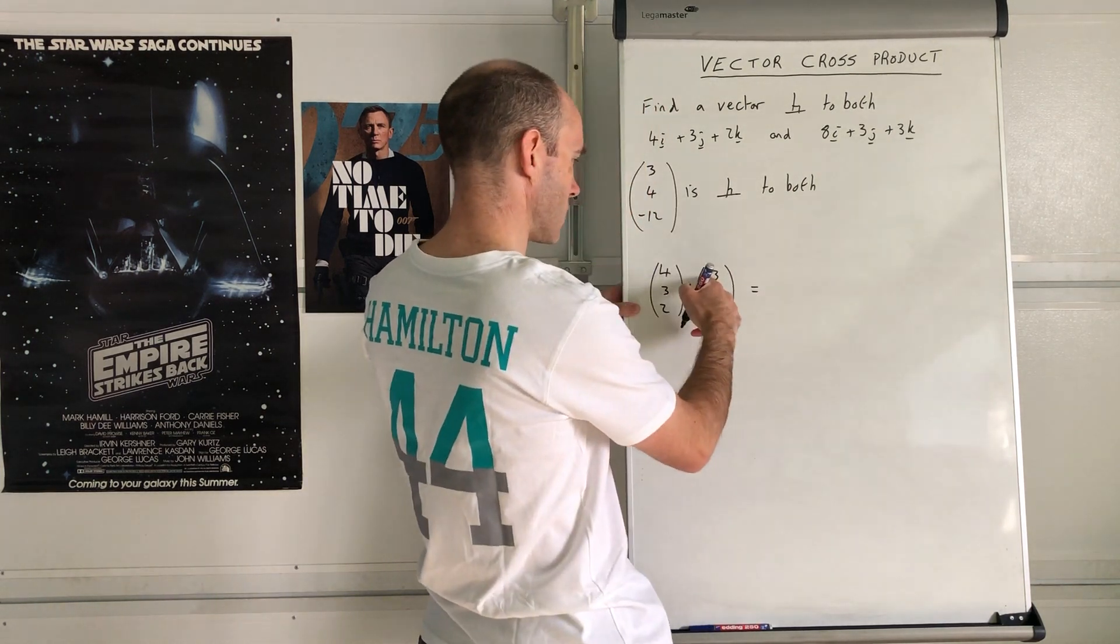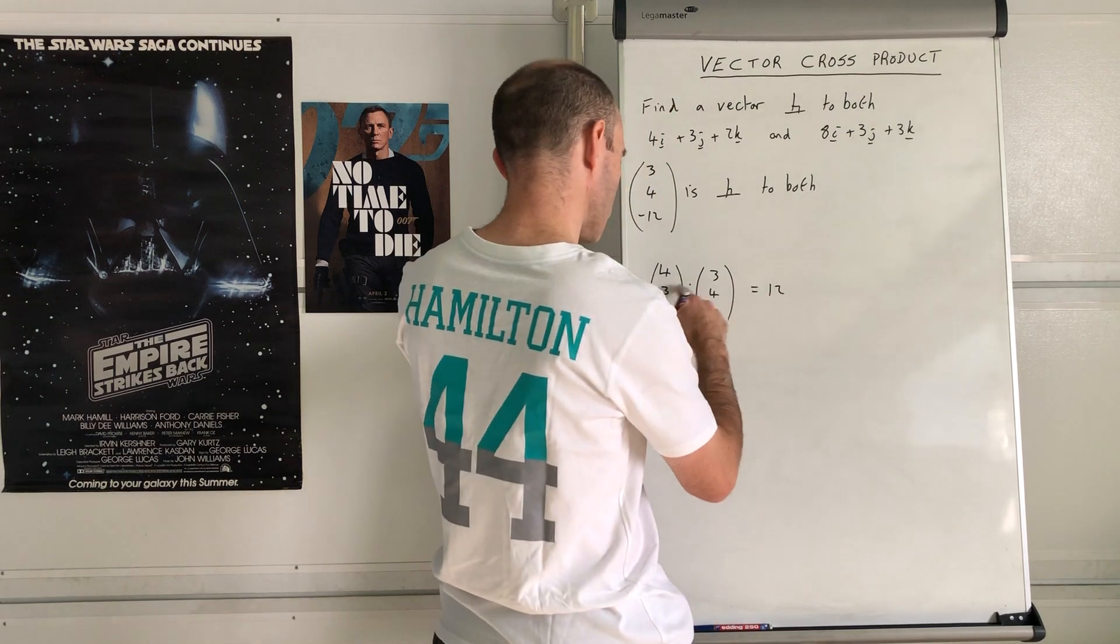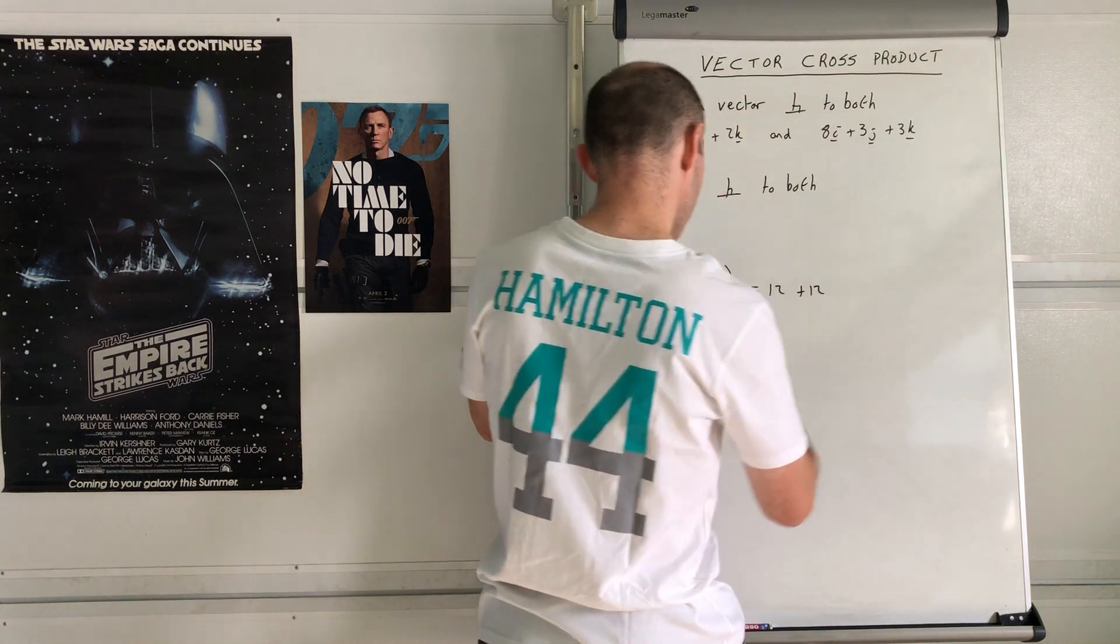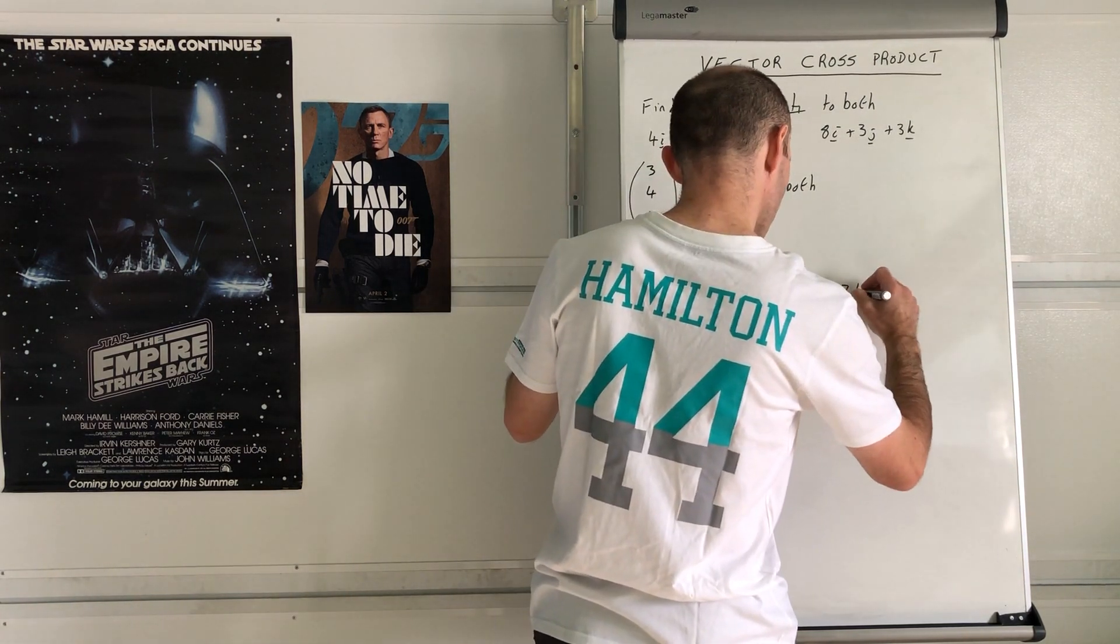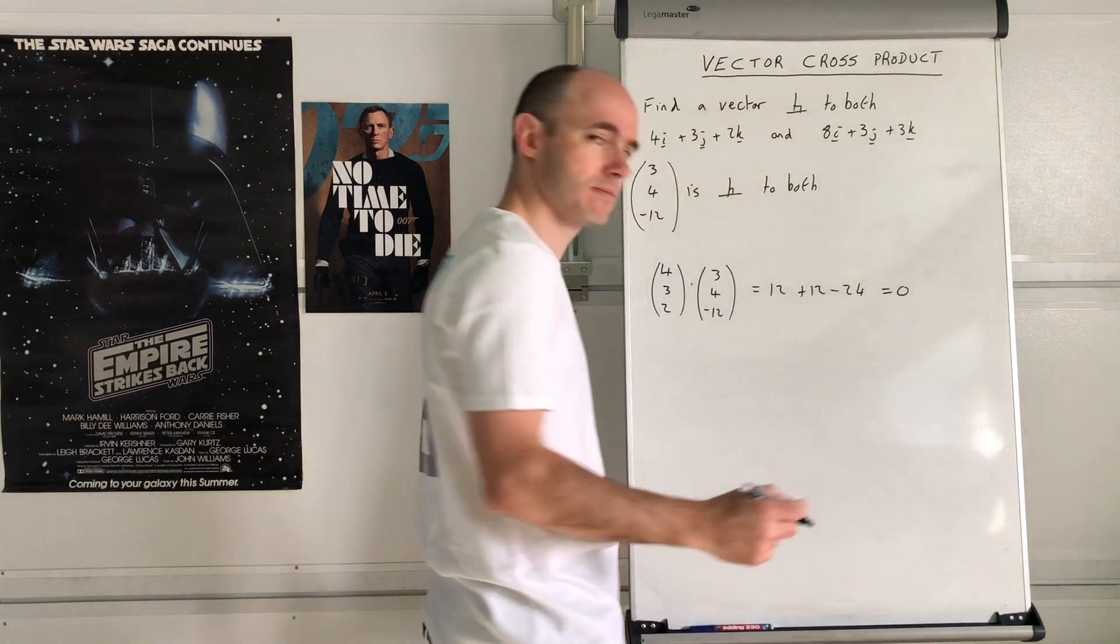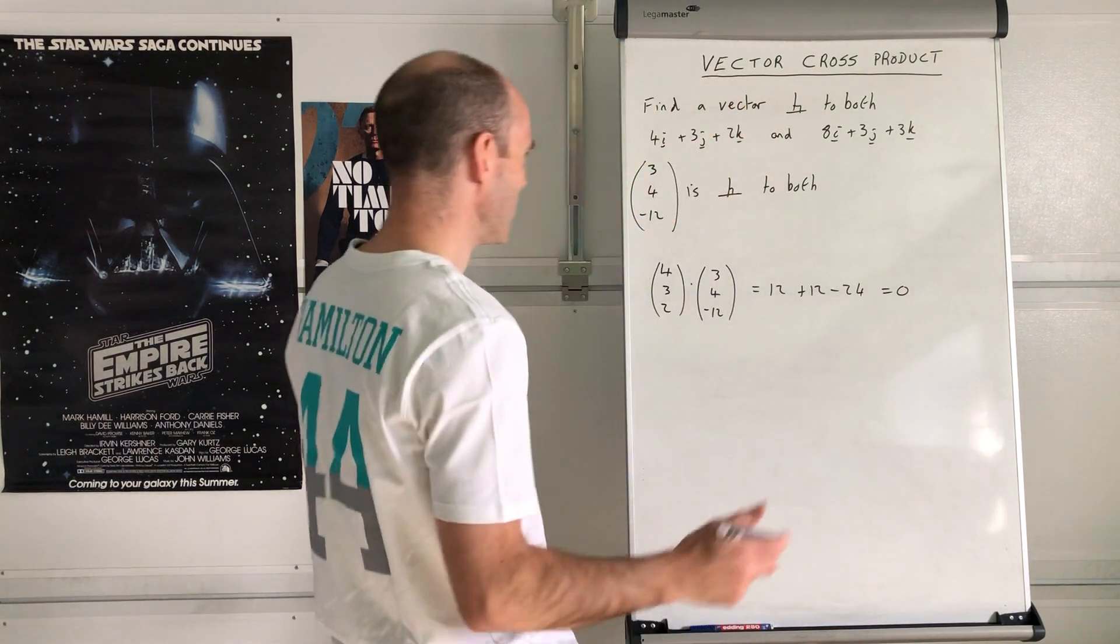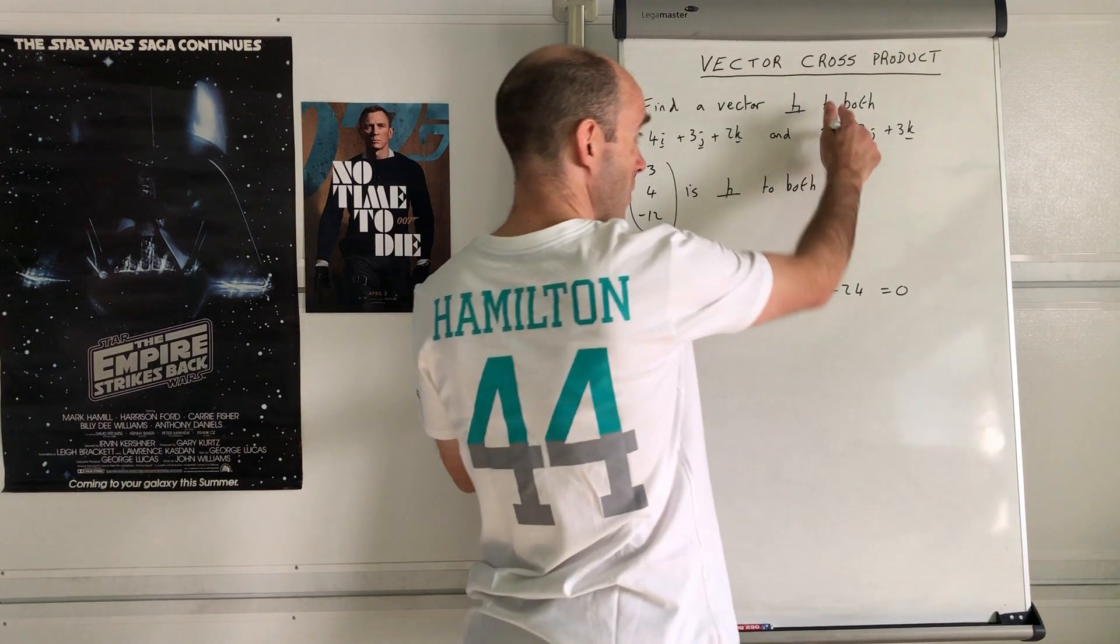You get 12 plus 12 subtract 24 which is 0. What does that mean? Let me do the other one because you've got to do it for both of them.